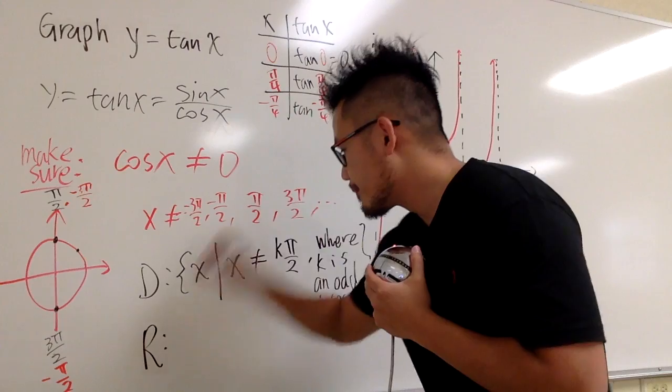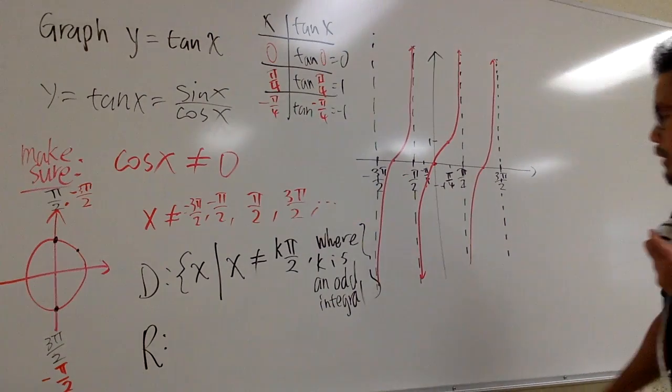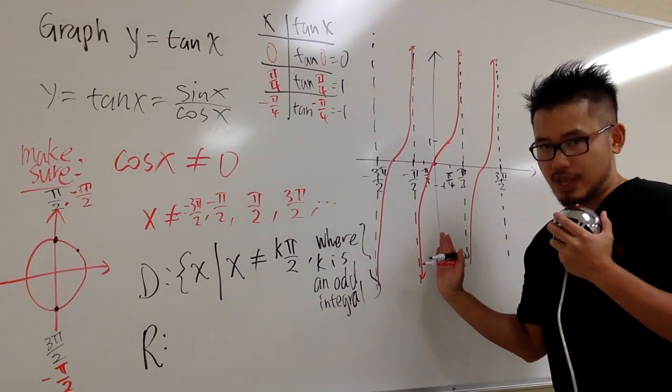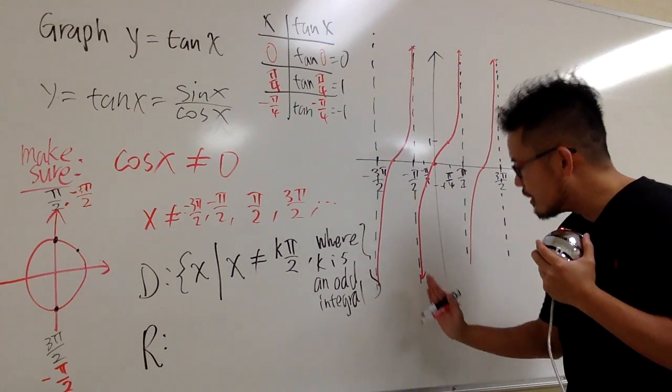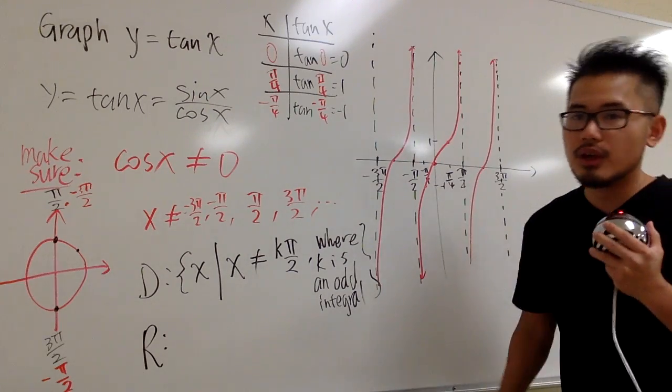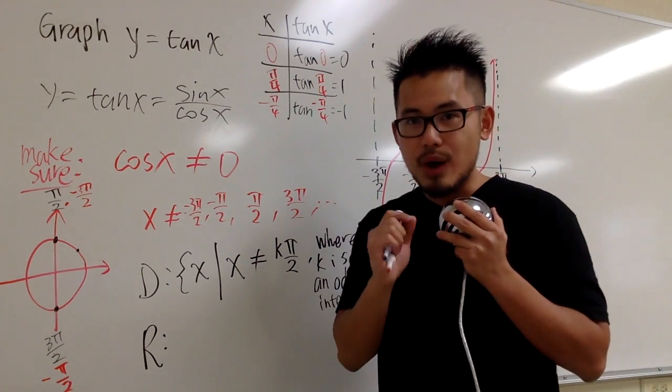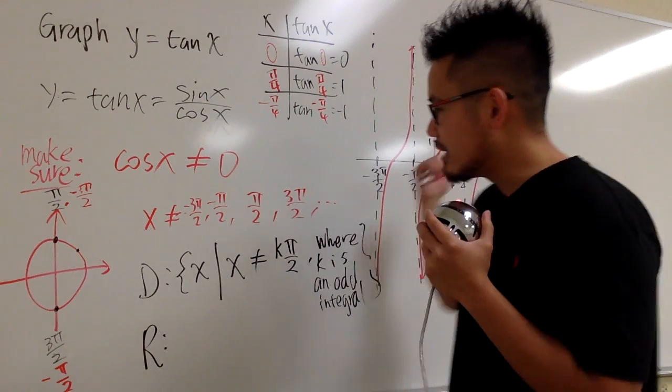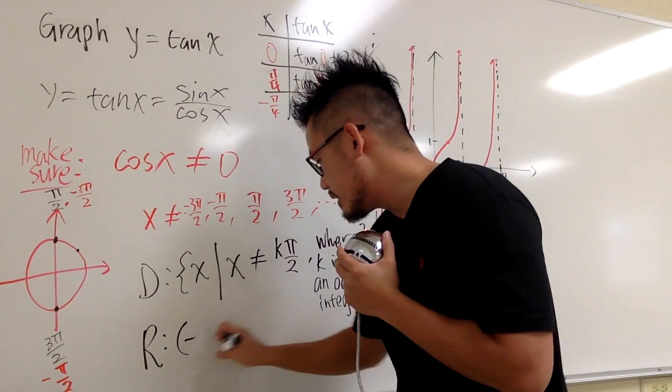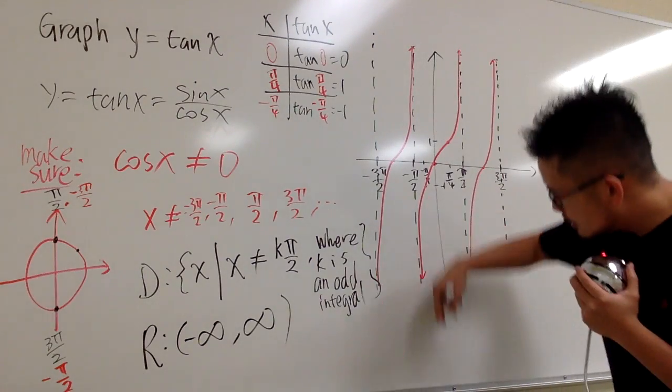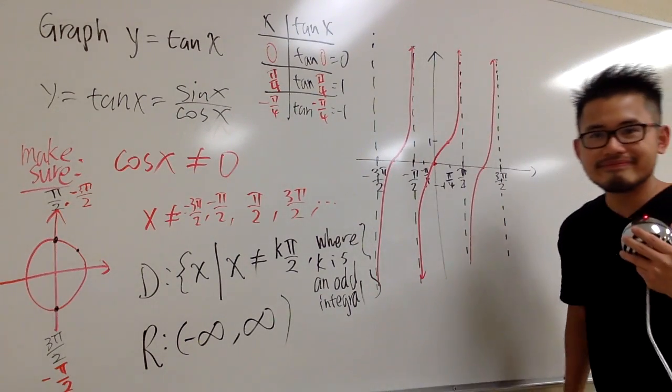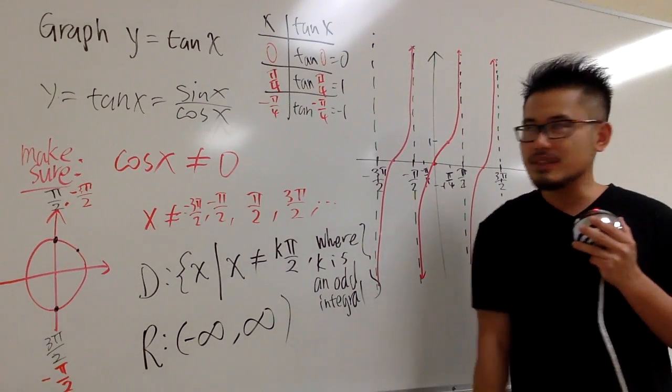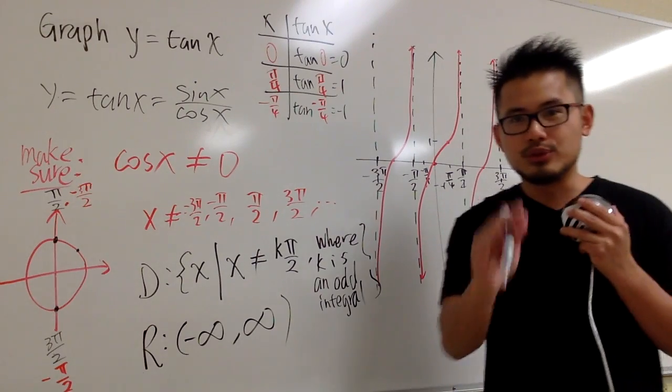And then for the range, this is something you can remember quickly. You see that the graph of tangent, it goes straight down here, and then it goes straight up, right? The range is all the y values, all the possible y values that you can get from the graph. So, for the range right here, it's negative infinity up to positive infinity. Straight down here, straight up here. That's it. So, check out the next video. I will graph the question you ask.